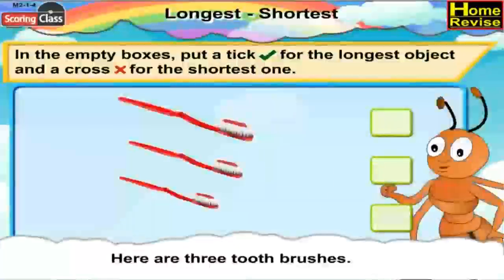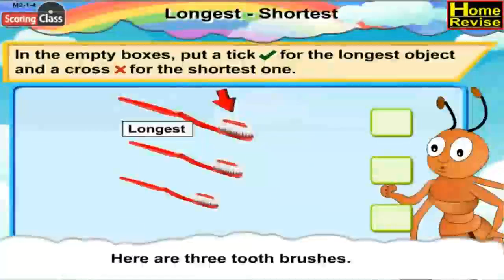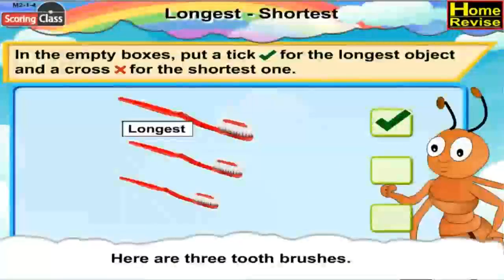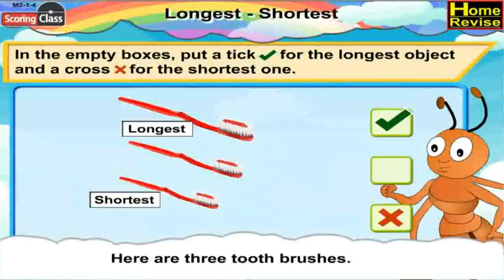Here are three toothbrushes. Which one is the longest? You're right — the first one. So put a tick in the box. Which one is the shortest? The third one is the shortest, so put a cross in the box in front of the third toothbrush.